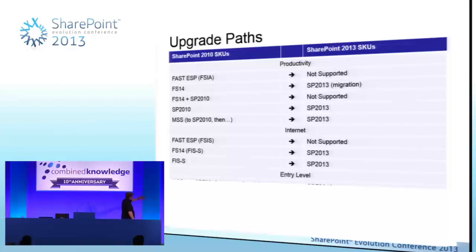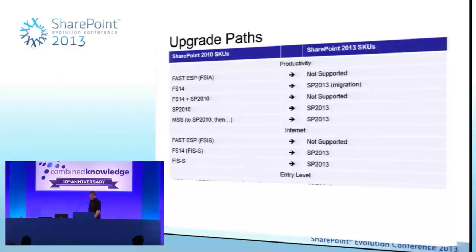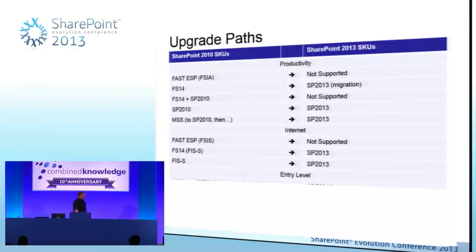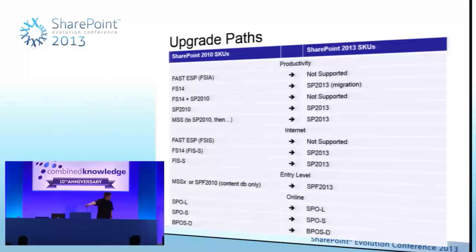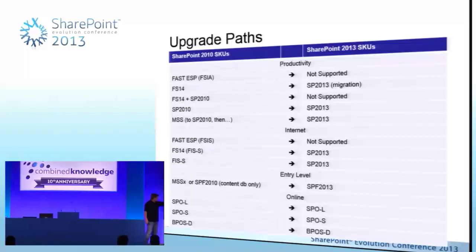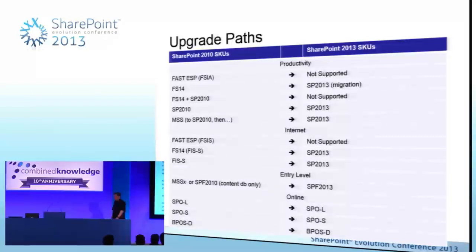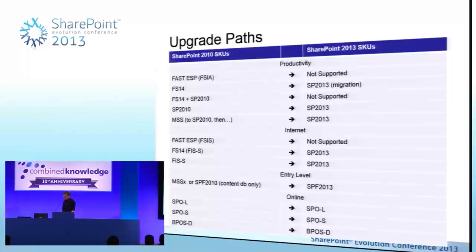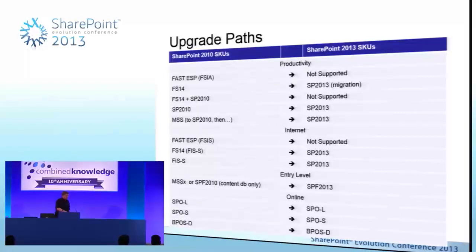On internet capability, Fast ESP services and Fast for Internet sites have no option. Microsoft's Search Server has also gone — there is no Search Server 2013. Your option is to use Foundation Search, or use SharePoint Server if you want the full-blown capabilities. In SharePoint online world, the Office 365 terminology means these acronyms don't make much sense anymore. In Office 365, whether dedicated or multi-tenant, you don't really need to care about it — hopefully we'll take care of that for you.